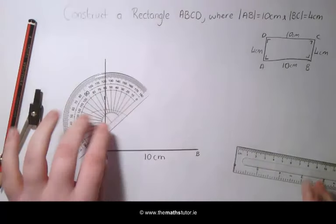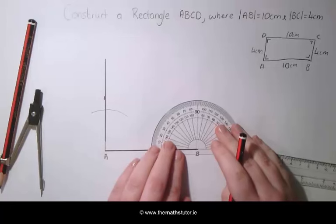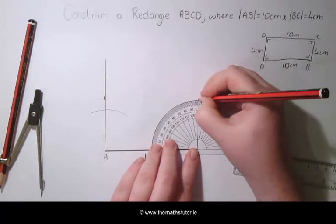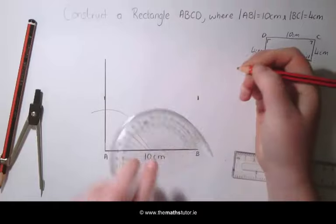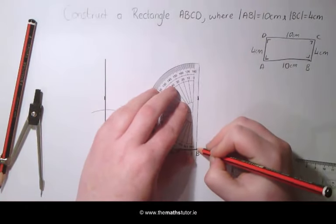On the other side at B, we also know there is a right angle, so we are going to mark 90 degrees again and draw a line through this.